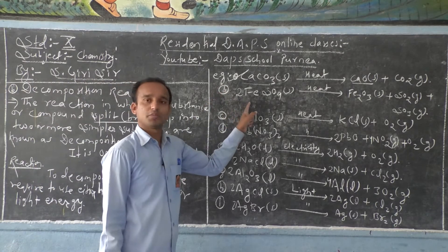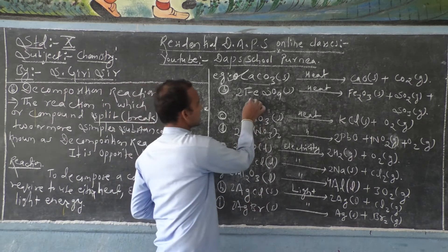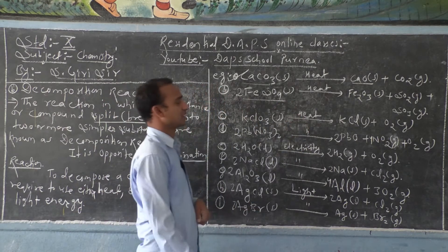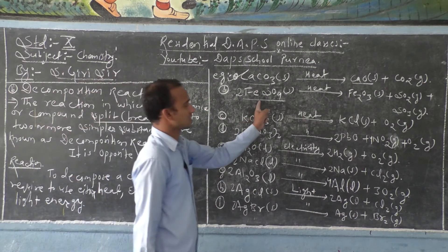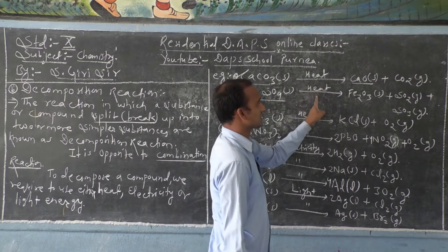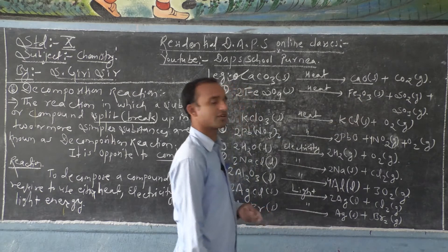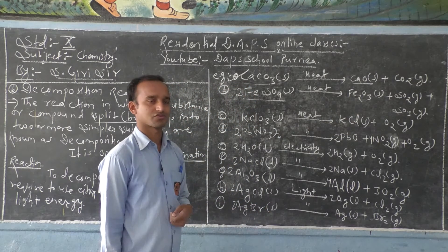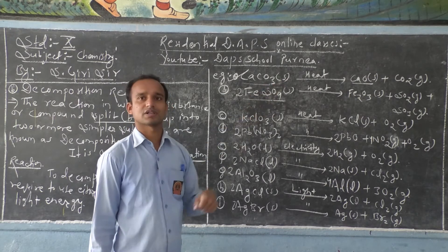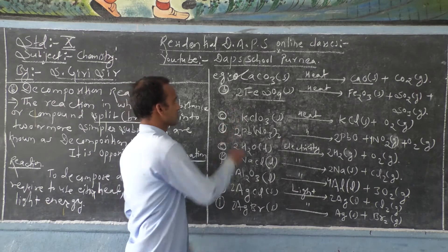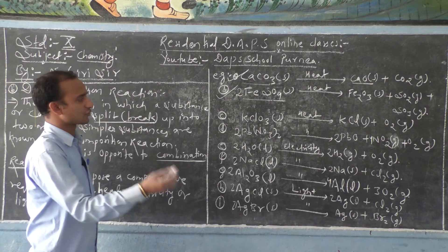Number B: take ferrous sulphate, also available in solid state. When you heat the ferrous sulphate crystals using heat energy, it breaks into ferric oxide along with sulphur dioxide and sulphur trioxide gas. Ferrous sulphate is breaking into three different substances, so this reaction is also a decomposition reaction — opposite to combination reactions.